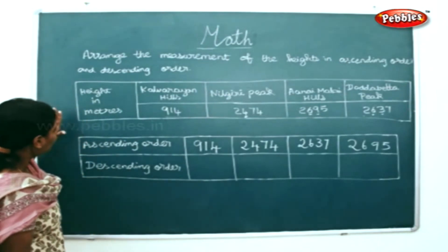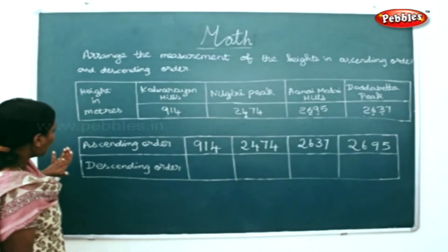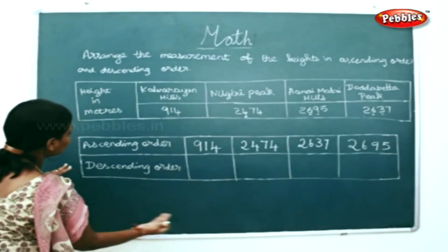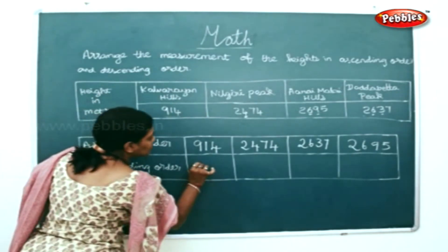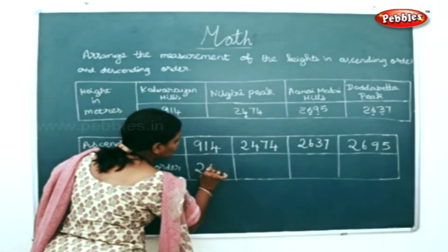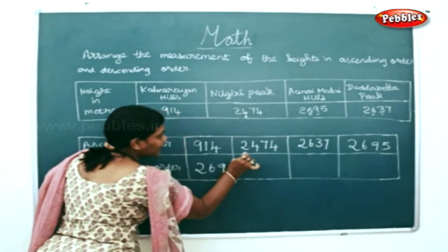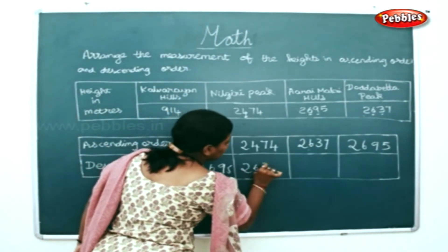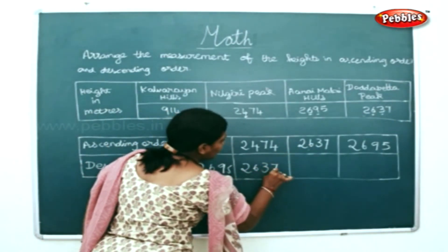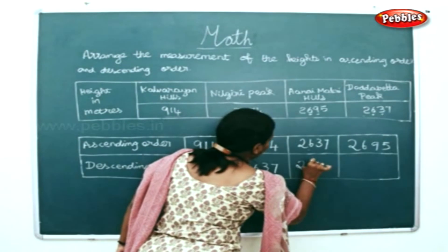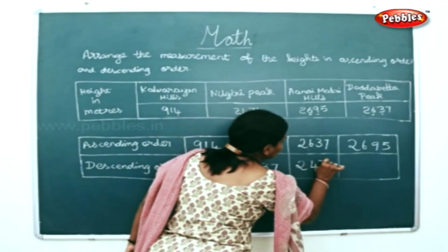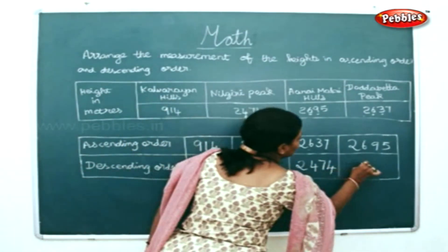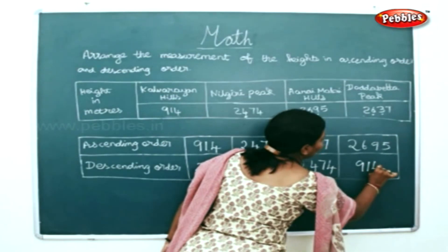As I told you, for a given set of numbers, if they ask for ascending and descending order, the descending is nothing but the reverse of the ascending order. So the descending order is: 2,6,9,5 — then 2,6,3,7 — then 2,4,7,4 — and the last would be 9,1,4.